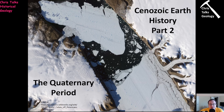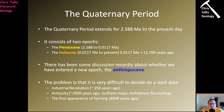So now let's look at what was happening in the Quaternary. The Quaternary period extends from 2.6 million years ago to the present day, so it's pretty short. It consists of two epochs: the Pleistocene, which is about 2.6 million to 11,700 years ago, and the Holocene, which starts 11,700 years ago to the present day. The Holocene is tiny, geologically speaking.